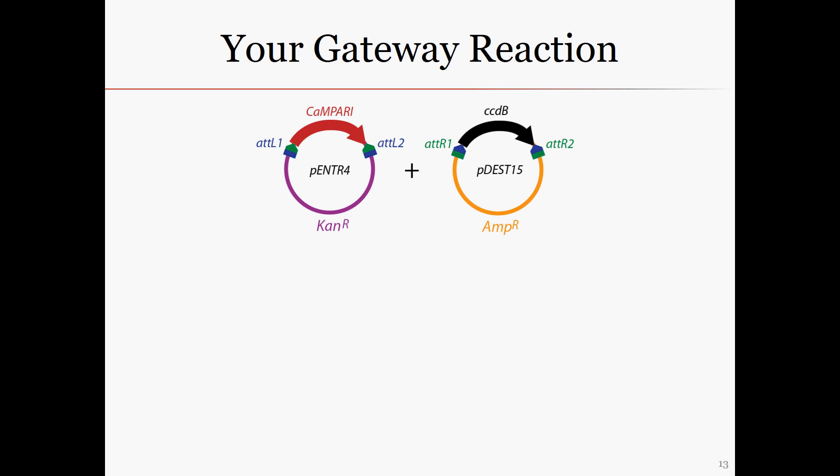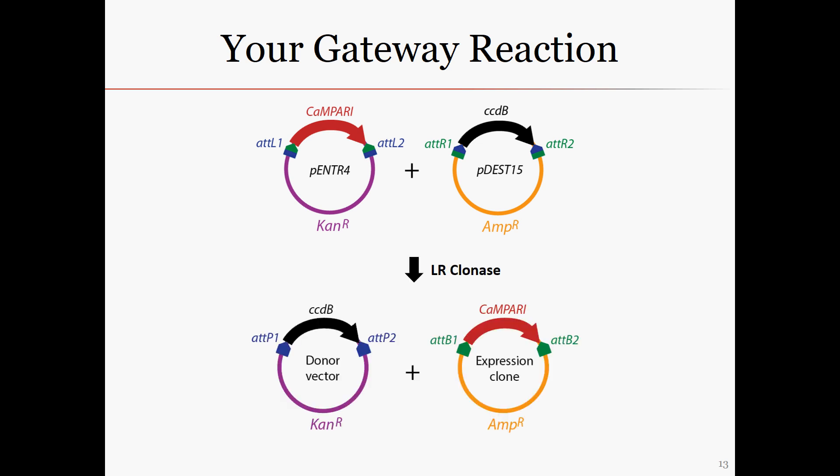So now, revisiting the gateway reaction that you will be performing in lab, we can see that our gene, Campari, is surrounded by att-L sites, and the destination vector has a region surrounded by att-R sites where our gene will go. Using LR clonase, the two regions will be swapped, creating att-B and att-P sites in our new plasmids. Note that unlike PCR cloning, there are never any linear intermediates.